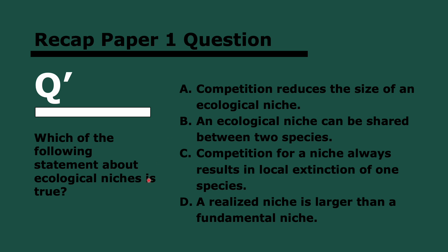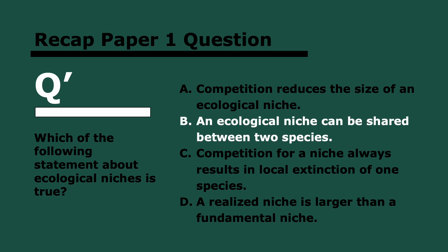The next question is: which of the following statements about ecological niches is true? The answer is: an ecological niche can be shared between two species — remember the concepts of the fundamental niche and the realized niche. Option A does not make sense — competition reduces the size of the realized niche, but not the fundamental niche. Option C — that competition for a niche always results in local extinction — is not true; they can share the niche. And option D — that a realized niche is larger than a fundamental niche — is the other way around.